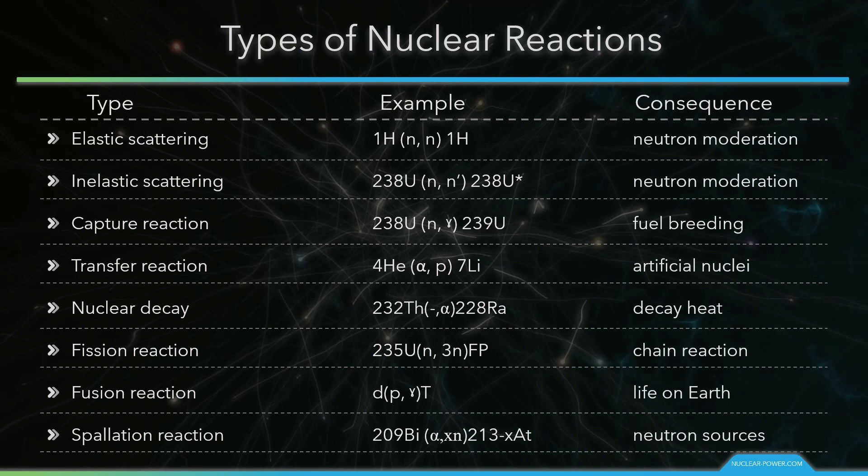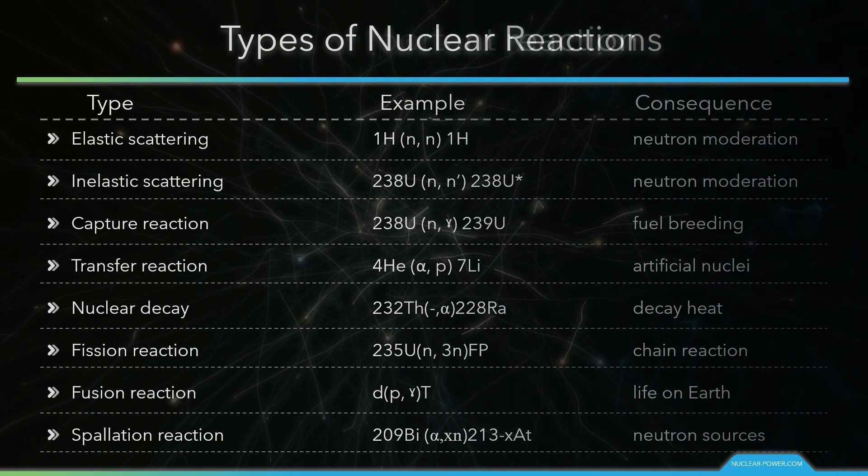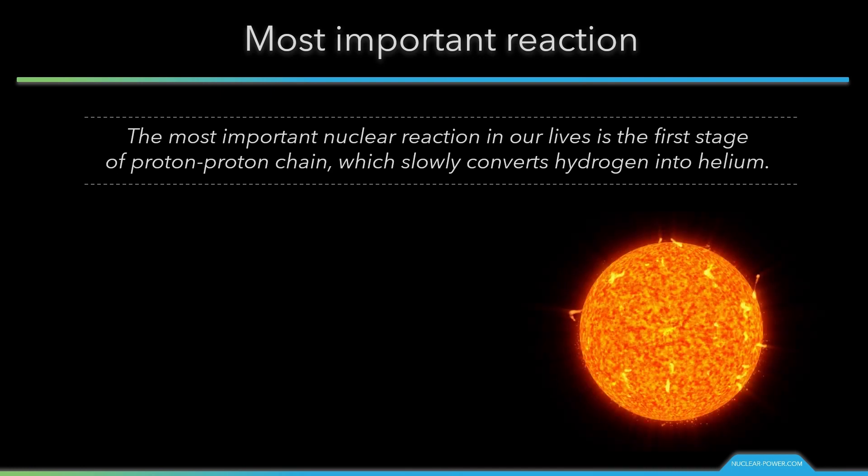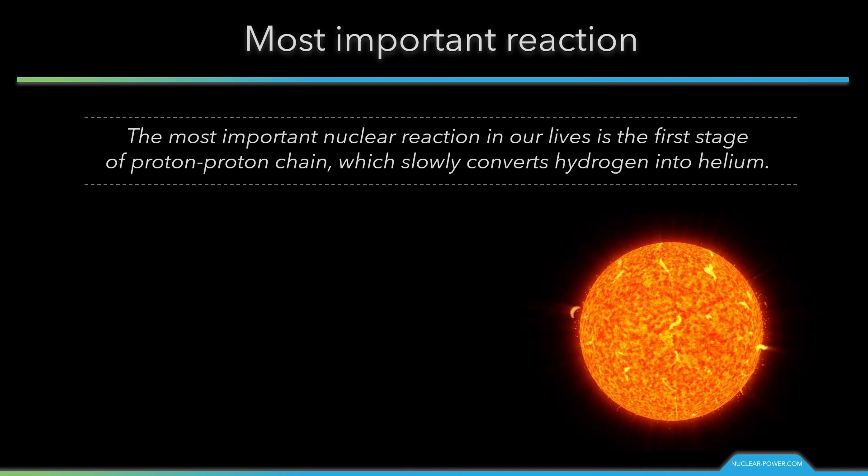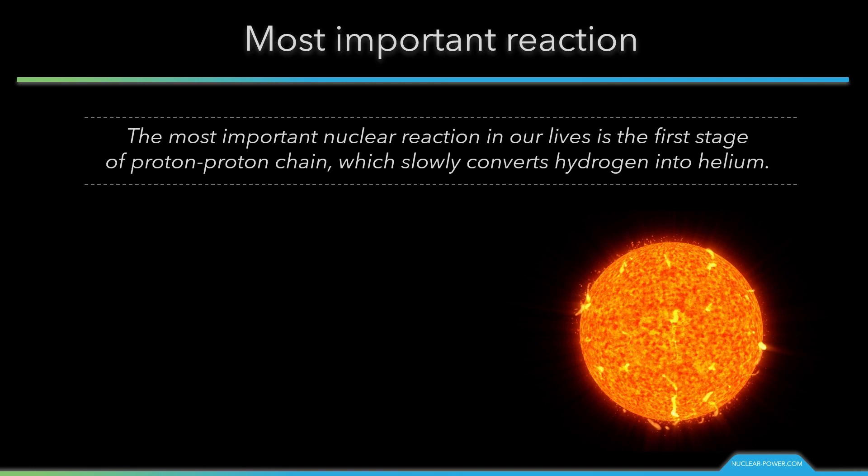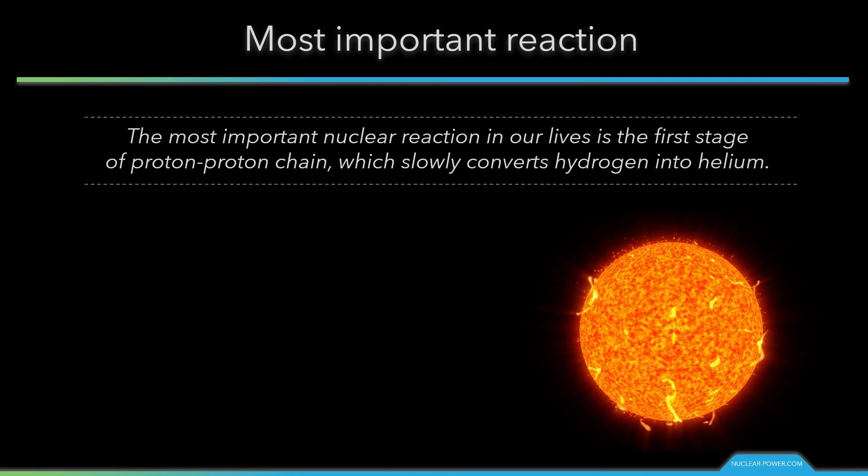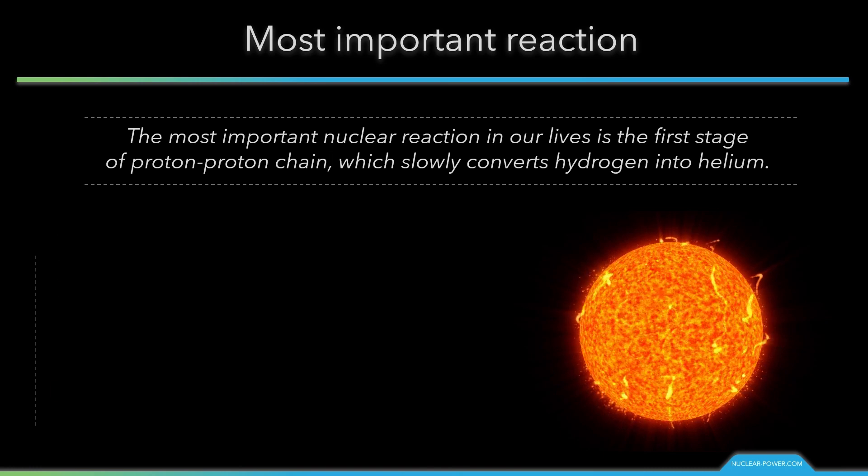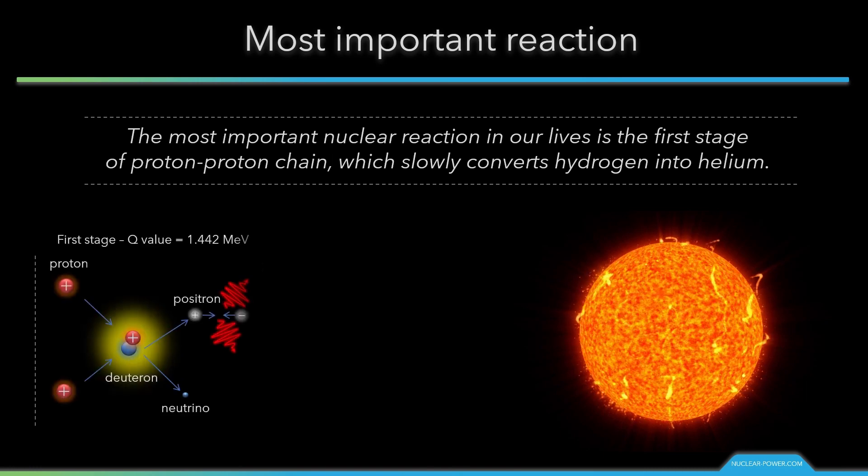If we could choose the most important one, we would choose the following. Perhaps the most notable nuclear reactions are the nuclear fusion reactions of light elements that power the energy production of stars and the Sun. During most of the Sun's life, energy has been produced by nuclear fusion in the core region through the proton-proton chain. This process converts hydrogen into helium.